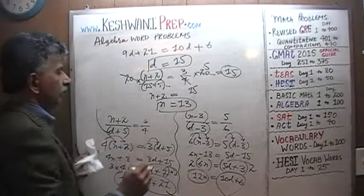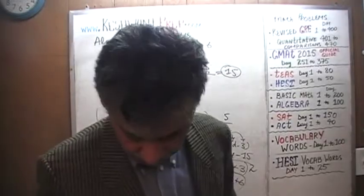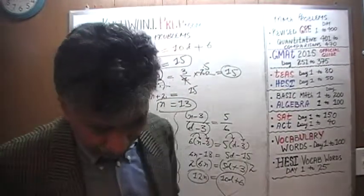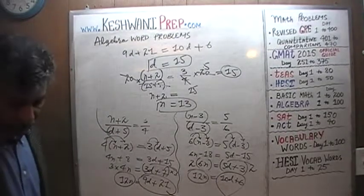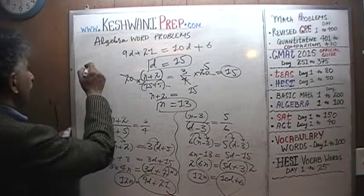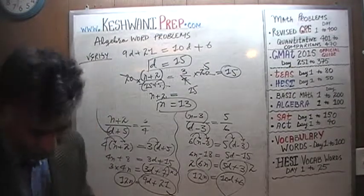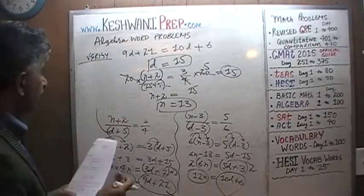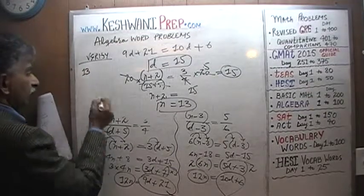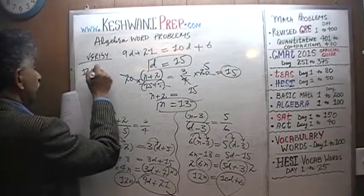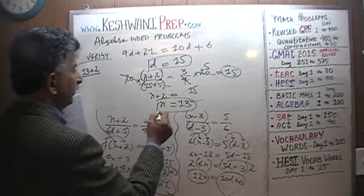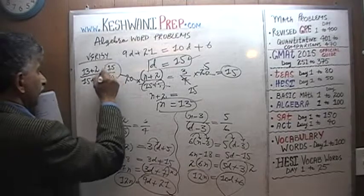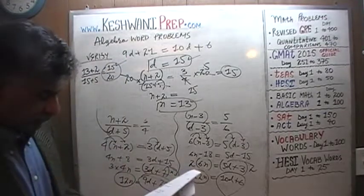There we go! I told you it would likely turn out to be a prime number, because otherwise there is a potential for reduction — fractions must be in their simplest form. Let's quickly verify our work. The problem told us that if you add 2 to the numerator (which we claim is 13) and add 5 to the denominator (which we claim is 15), we get 15 over 20, which is indeed 3 quarters.